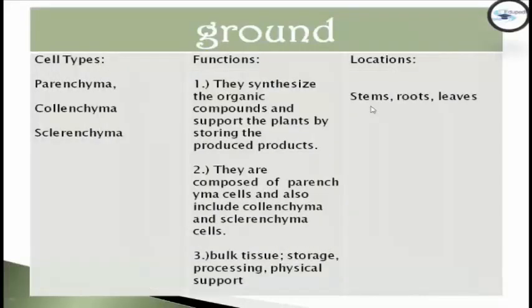The third system is the ground system. It has three types of cells: parenchyma, collenchyma, and sclerenchyma. This system has three major functions. First, they synthesize organic compounds and support the plants by storing the produced products. Second, they are composed of parenchyma cells and also include collenchyma and sclerenchyma cells, which are involved in storage, processing, or physical support. This system is located in stems, roots, and leaves.